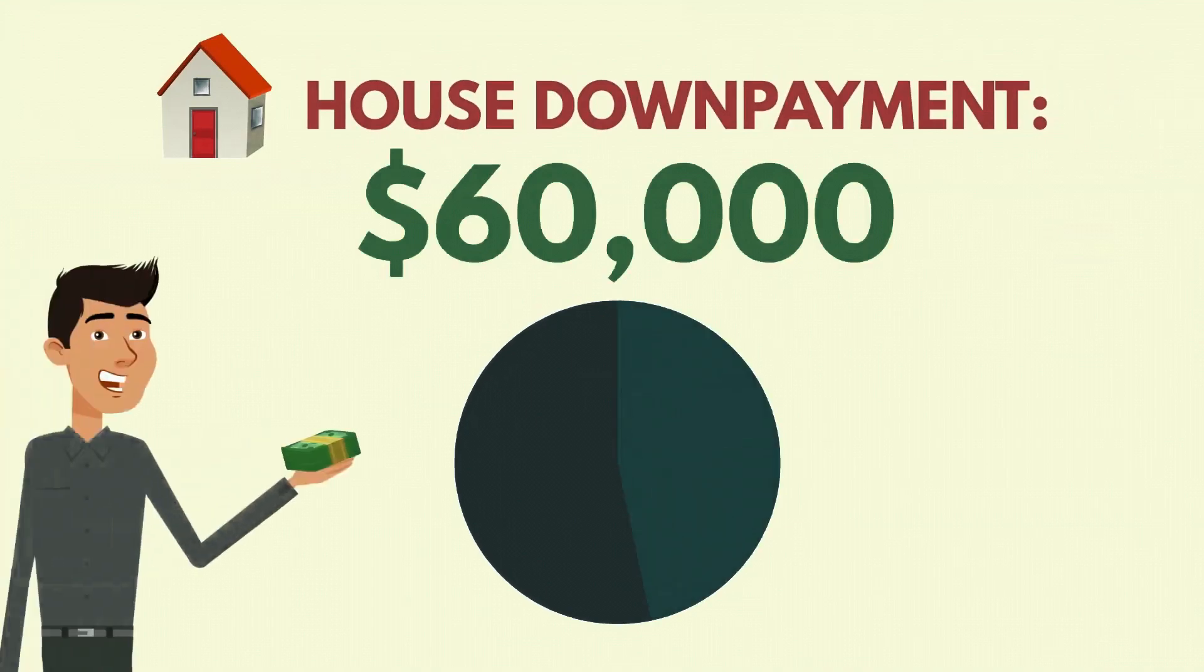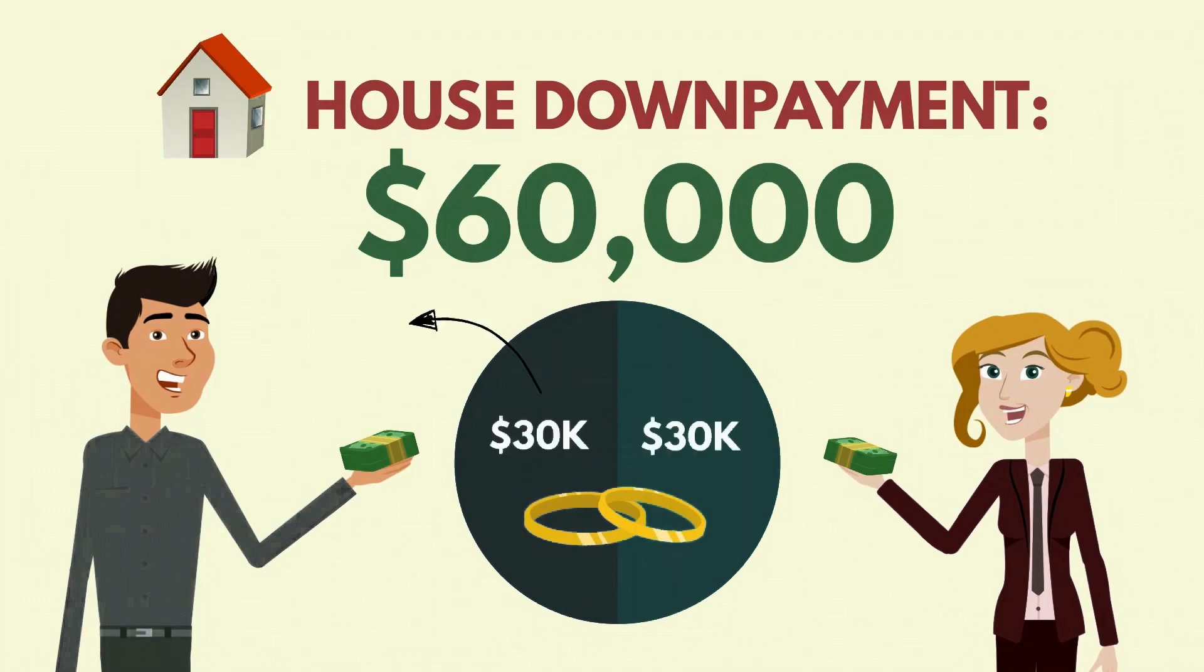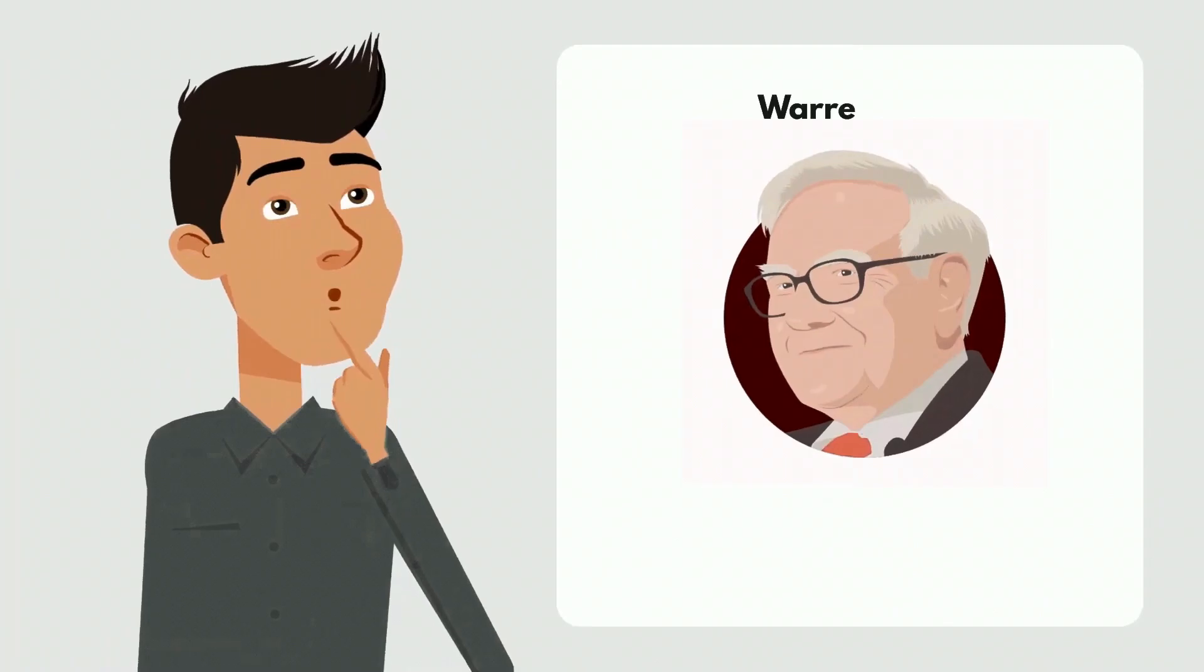The journey to $150,000 wasn't easy, and it wasn't without its setbacks. But it was a journey marked by resilience, learning, and unwavering commitment to the principles of intelligent investing. It's a journey that teaches us that the road to financial success is often paved with challenges. But with the right mindset and strategies, these challenges can be overcome. Join us in our next segment as we witness Tom's portfolio grow to half a million dollars, and explore how he adapts his strategies to face new market environments and personal growth.